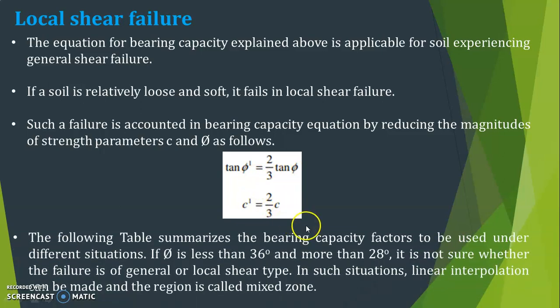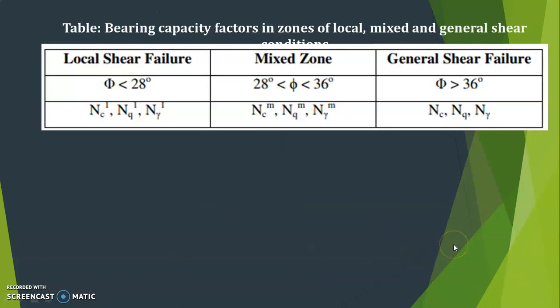The following table summarizes the bearing capacity factors under different situations. If φ is between 28° and 36°, it is not clear whether the failure is general or local shear type. In such situations, linear interpolation can be made and that region is called the mixed zone. If φ is less than 28° it is local shear failure; if φ is greater than 36° it is general shear failure.